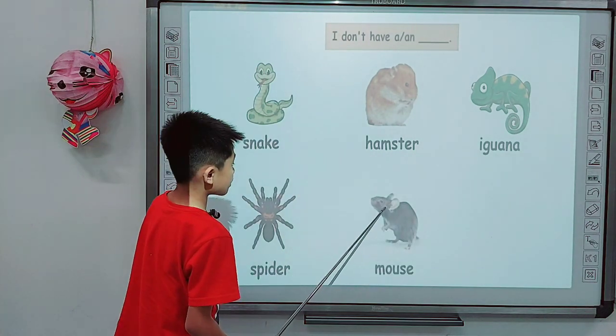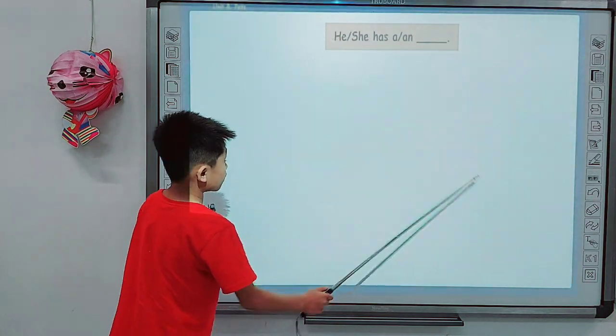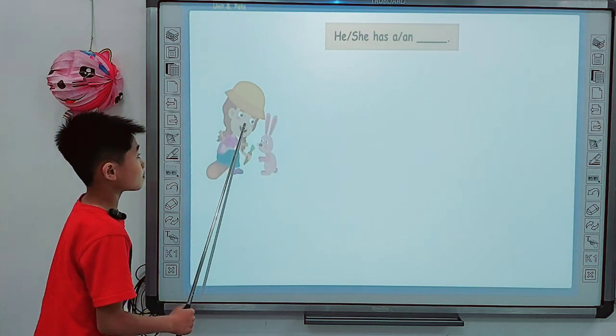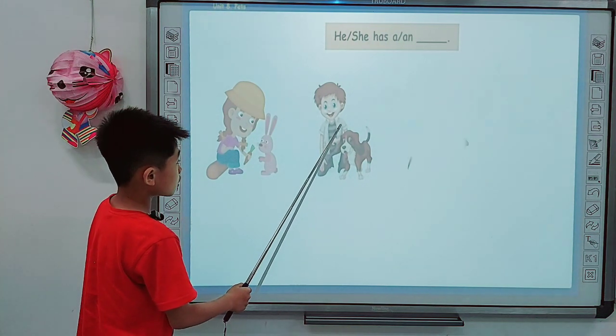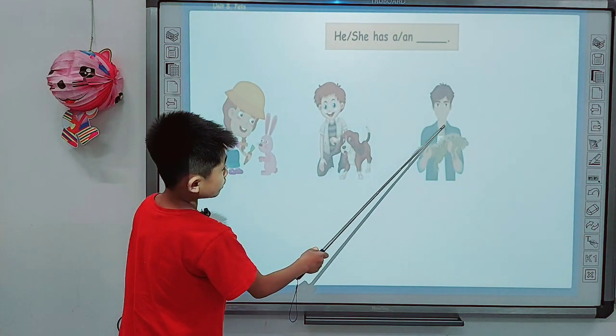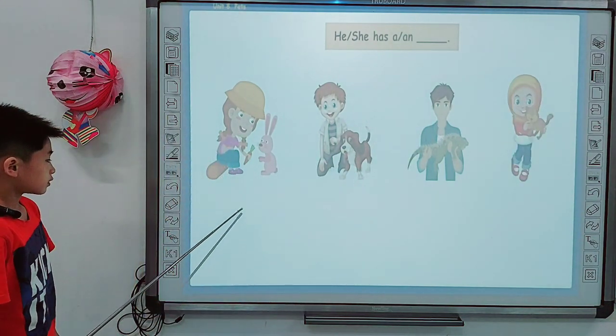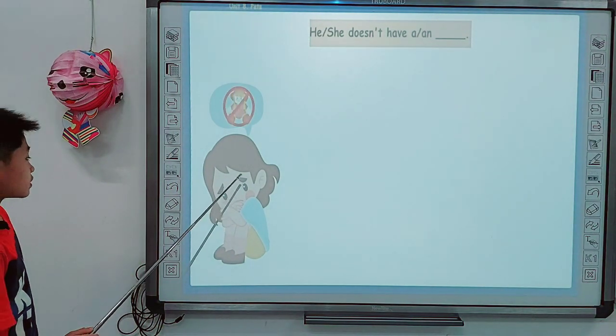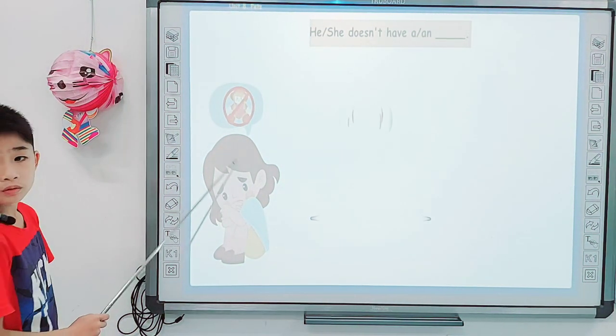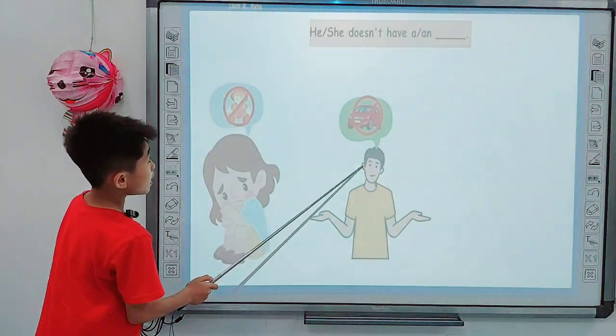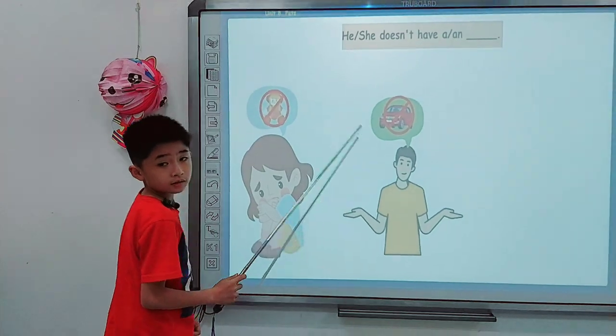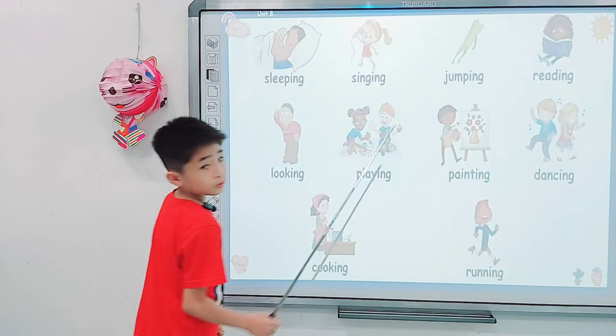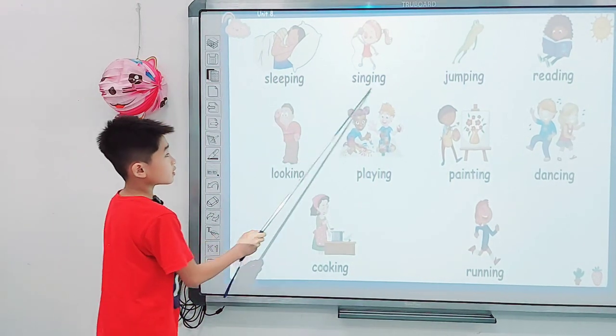Nice one. She has puppies. He has a dog. He doesn't have a dog. She doesn't have a cat. Nice one. She doesn't have a turtle. Good job.